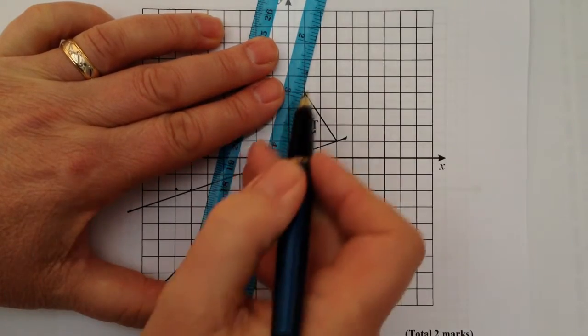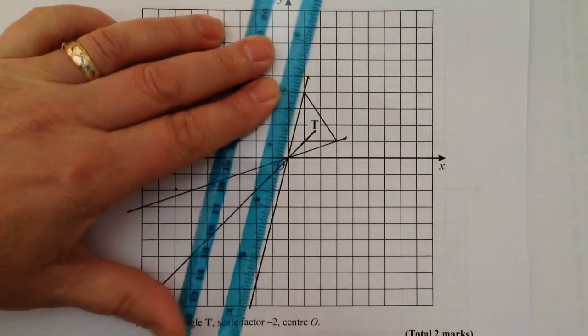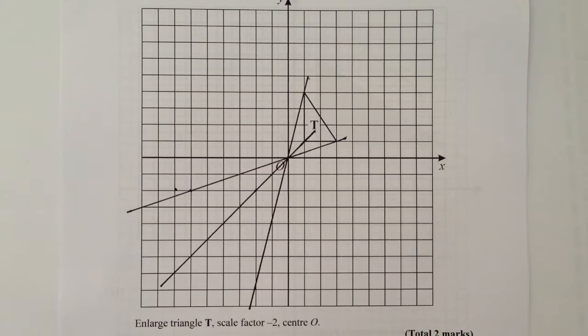And what it will allow me to do then is to work out where the new corners of my new shape are. So the first thing I'm going to do is that I know it's a scale factor of 2. It's minus, so it's going to go in the opposite direction.